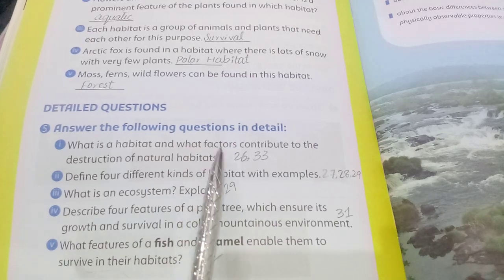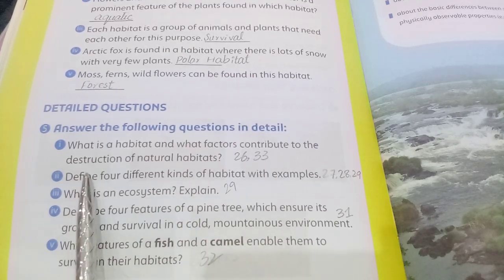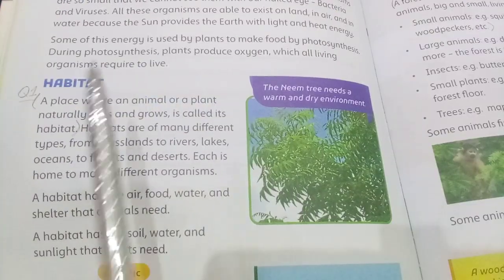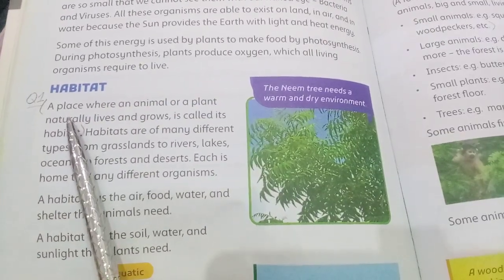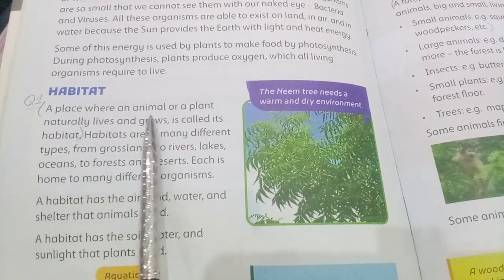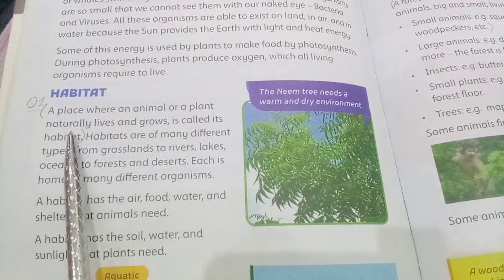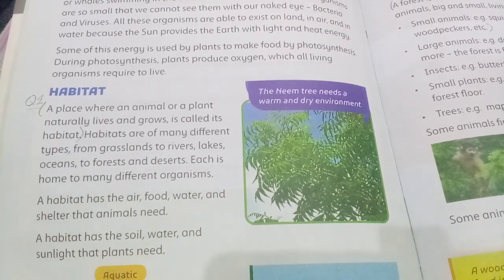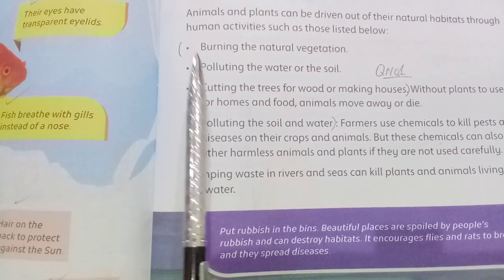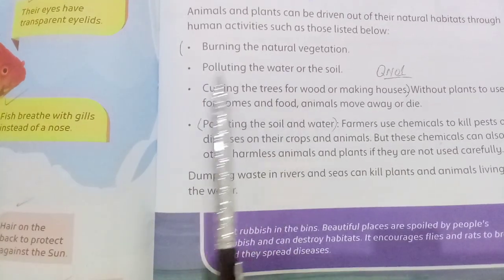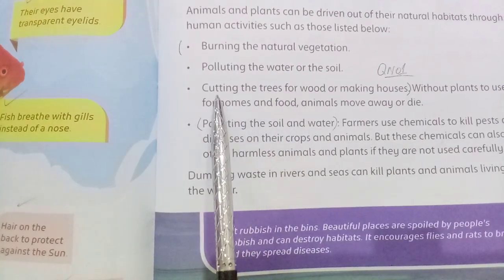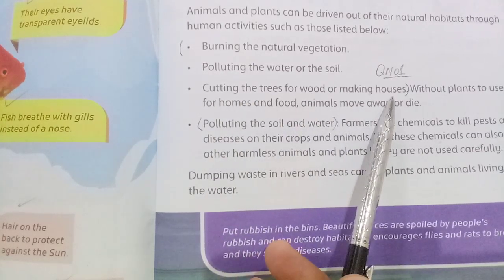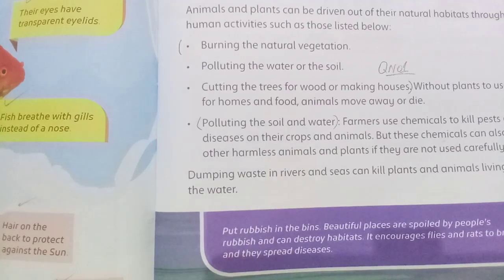Detail answers. Question one: what is a habitat, and what factors contribute to destruction of natural habitats? A place where an animal or a plant naturally lives and grows is called its habitat. Factors include: burning the natural vegetation, polluting the water or soil, and cutting the trees for wood or making houses.